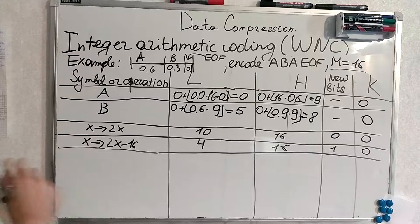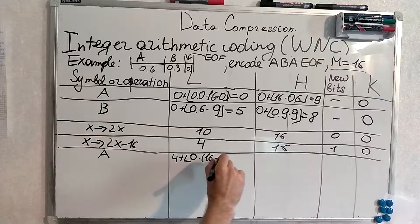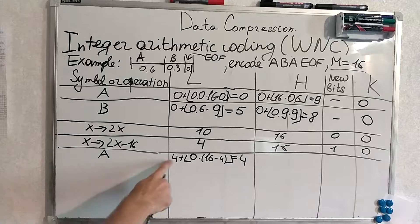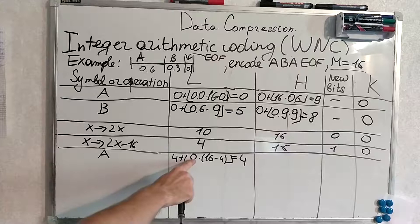Next. Now we can go to the next symbol. It's A. We recalculate. 4 plus... We used previous L. Lower threshold plus what corresponds to the symbols, probabilities of the symbols up to A. This is 0. No symbols before A.